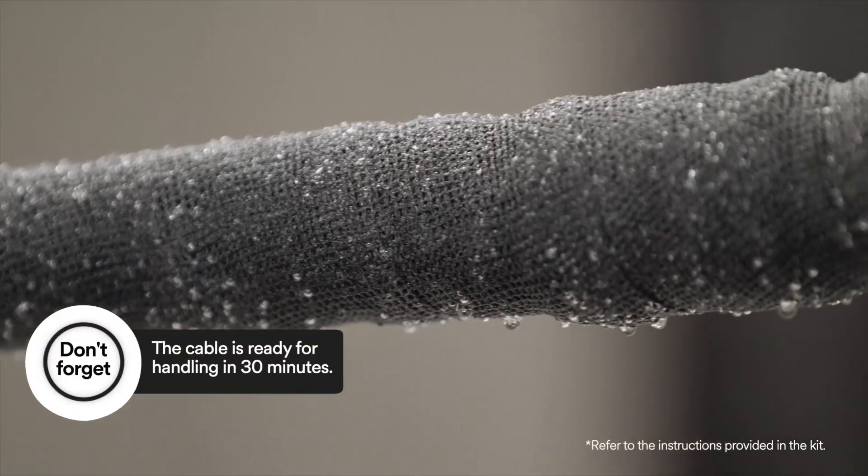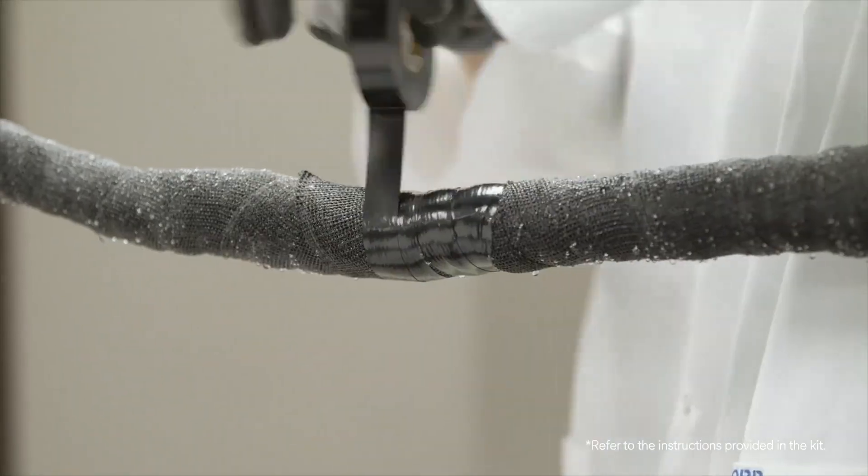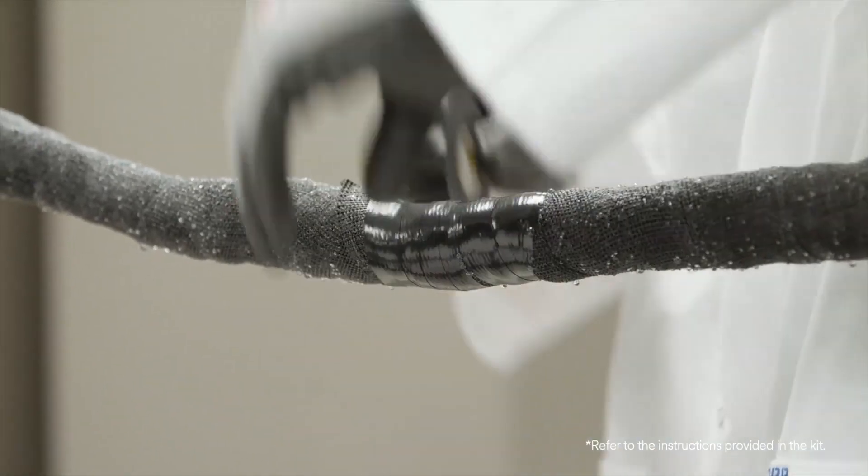After you've finished applying the sheath wrap, wrap the end with Scotch Professional Grade Vinyl Electrical Tape Super 88.